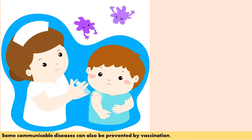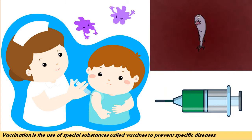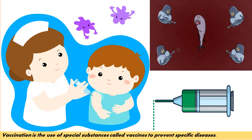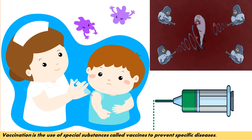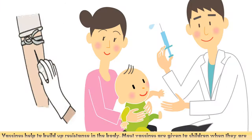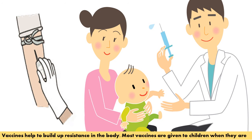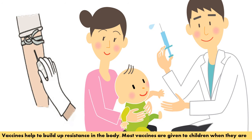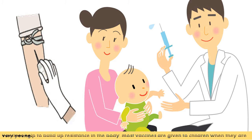Some communicable diseases can also be prevented by vaccination. Vaccination is the use of special substances called vaccines to prevent specific diseases. Vaccines help to build up resistance in the body, and most vaccines are given to children when they are very young.